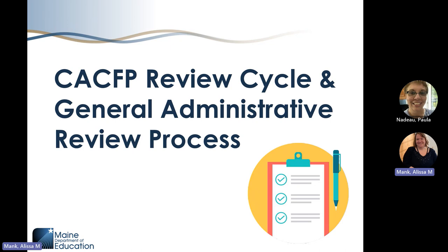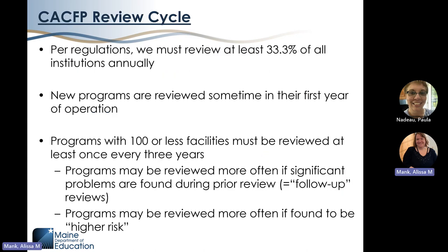Let's take a look at the CACFP review cycle and the process for choosing which programs we review each year. According to regulations, we must review at least 33.3% of the total number of institutions participating in the program as of October 1st. New programs are reviewed once during their first year of operation, usually within the first six months. After that, we have a three-year review cycle, so programs are typically reviewed once every three years unless we find significant problems, in which case we may be required to do a follow-up review the next year.